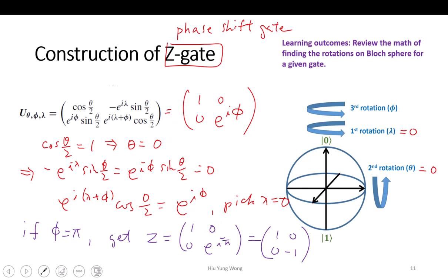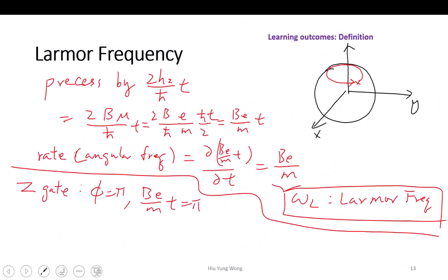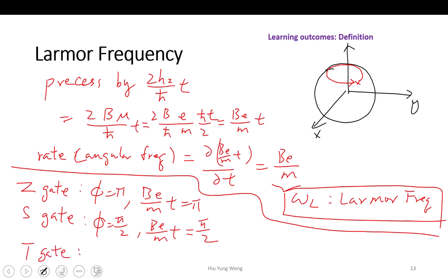That is the good thing about the Bloch sphere — it helps us visualize. How about if I want to create an S-gate? Do you remember what the S-gate is? It's just the square root of the Z-gate, which means phi equals pi/2. Then you need to set your time or magnetic field so that B*e/m * T equals pi/2. And if you want to create a T-gate, you need to rotate it by pi/4, so again set your magnetic field and time equal to pi/4, and then you create the T-gate.